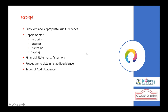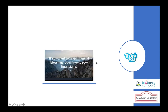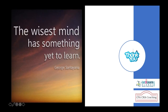To recap, the topics covered in the inventory cycle include: the auditor must obtain sufficient and appropriate audit evidence to form an opinion; departments must be properly segregated per the company's policies and procedures; the departments related to inventory include purchasing, receiving, warehousing, and shipping; various financial statement assertions must be observed; and different types of audit evidence are used. Proper inventory verification provides assurance on the value of inventory presented on the balance sheet, helping to form an audit opinion. See you in the next session.